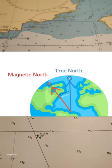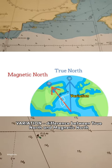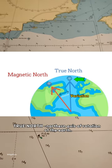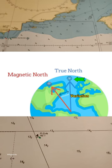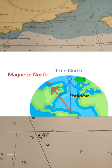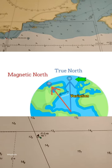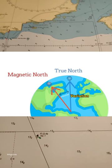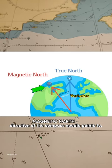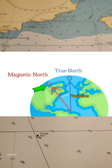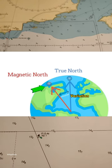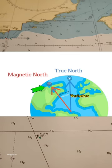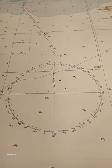Let's define first what is variation. Variation is the difference between the true north and the magnetic north. True north is the northern axis of rotation of the earth, or the point where the lines of longitude converge on maps — it is fixed and its direction does not change. Magnetic north is the direction the compass needle points as it aligns with Earth's magnetic field, and it changes as our direction or location changes.